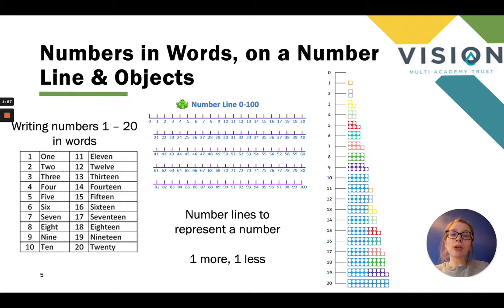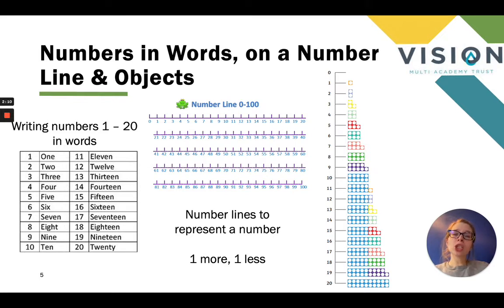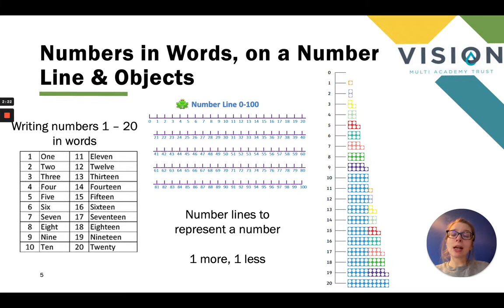Now we're going to be looking at numbers in words, on a number line and with objects. Not only do children need to know the numbers 0 to 100 in numerals, it's important that children can write and spell correctly numbers 1 to 20 in words. As you're teaching and supporting the children, you should be correcting those spellings and helping them spell the words correctly. I've put the examples on the left for you to see.